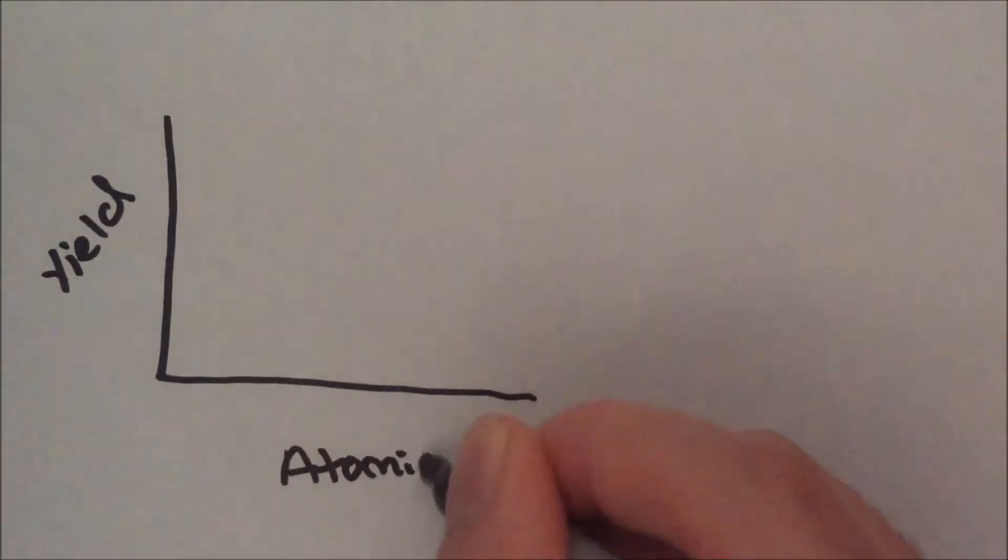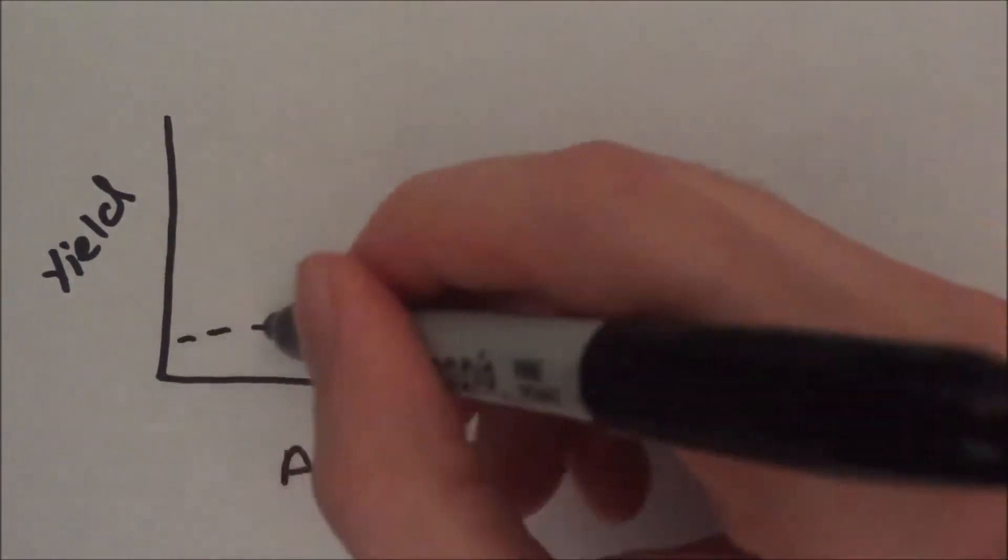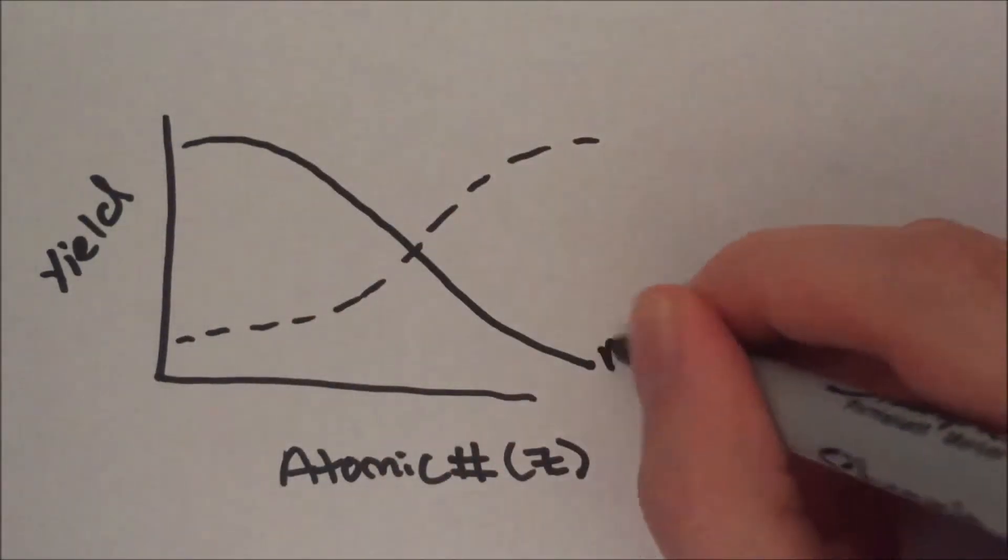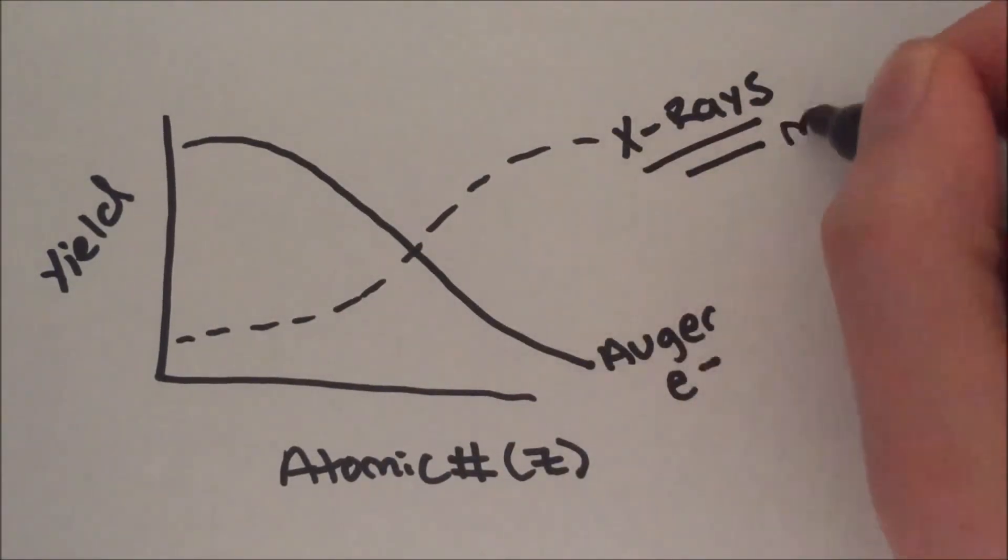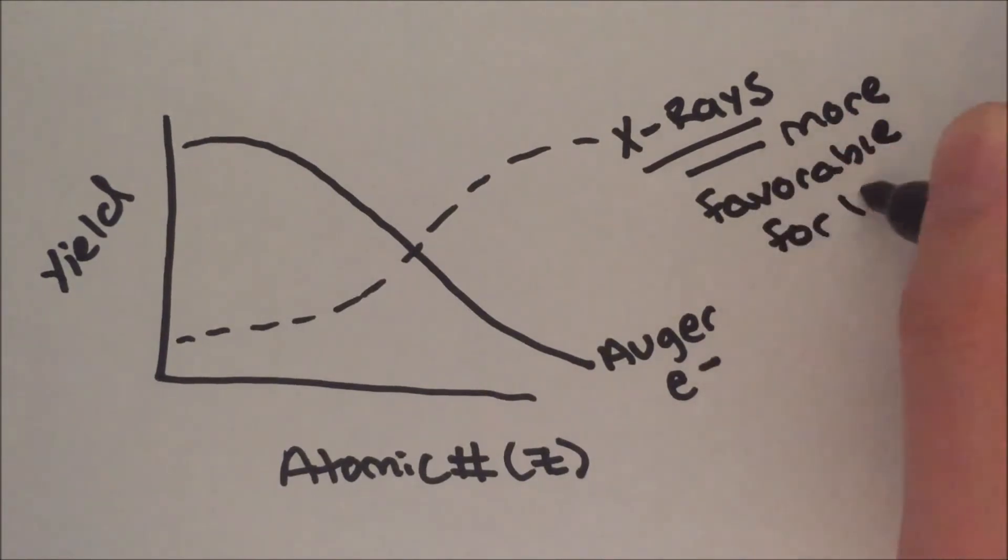If we consider the branching ratio of these two processes, we find that the relative yield for Auger electron generation decreases with increasing atomic number, while the competing process of X-ray generation becomes more favorable.